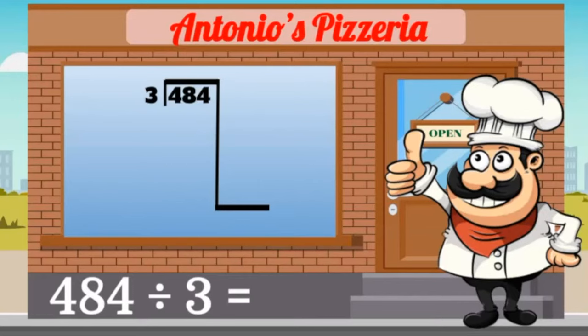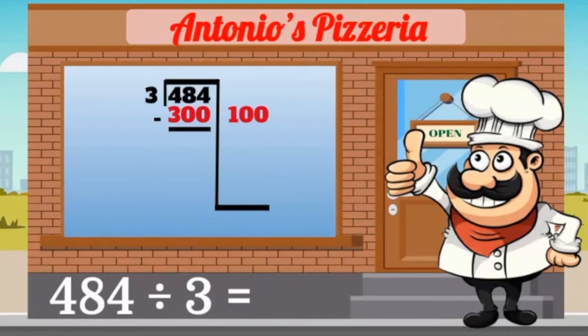I don't have to be exact. I know that it will go in at least 100 times. I write the 100 here. I need to see how close that got me. 100 times 3 equals 300. I subtract 300 from 484 to see what I have left to divide. 184.